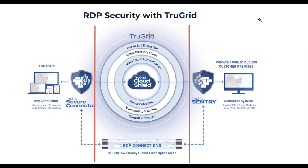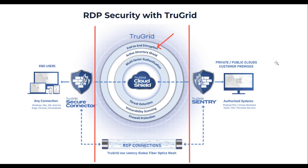A typical setup includes firewalls securing and separating end-users and remote Windows computers. This is where TrueGrid comes in. TrueGrid includes Cloud Shield, a secure access services edge system hosted in Microsoft Azure. Cloud Shield includes end-to-end encryption for all traffic it manages.